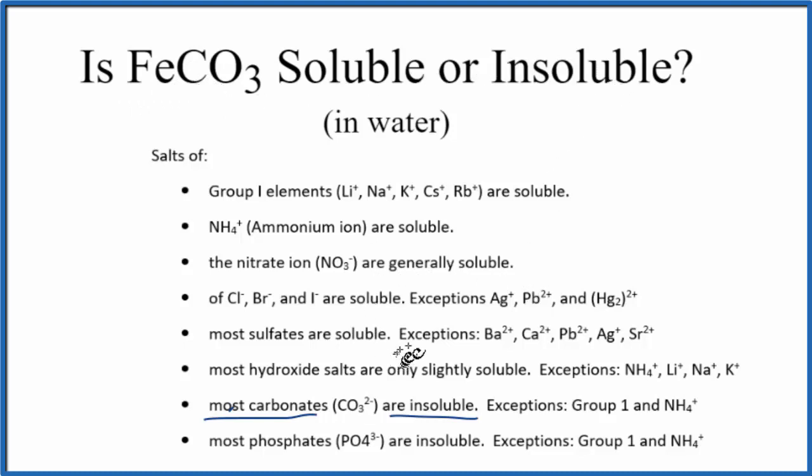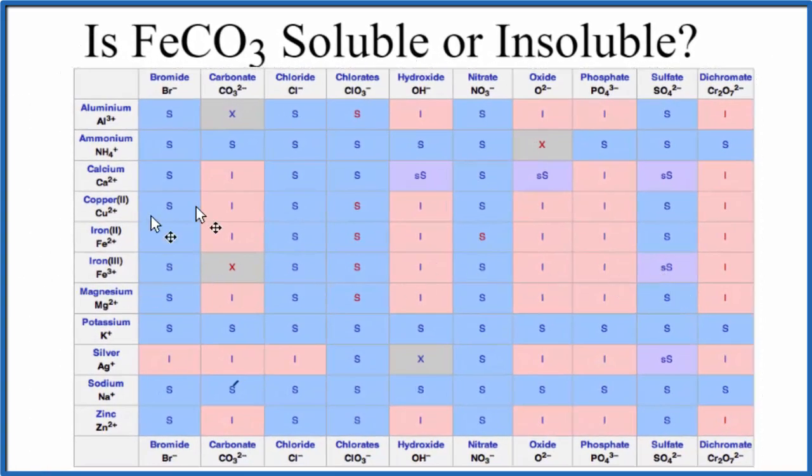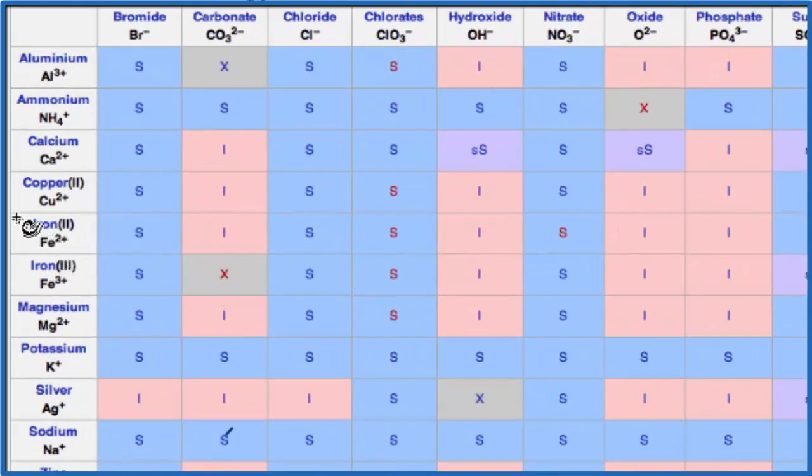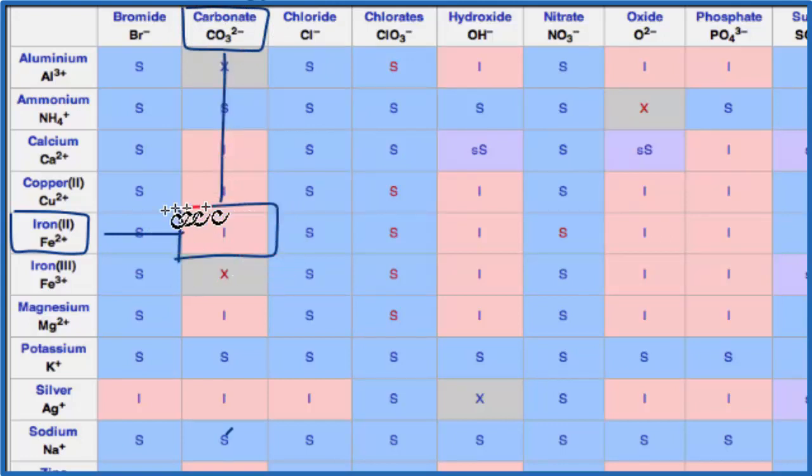We could also use a solubility chart to figure this out. So here's our chart. We look at the positive ions, and here's iron(II) right here. And across the top, here's the carbonate CO3 2-minus. So we go over and down, and we see with that 'I' there, that means it's insoluble.